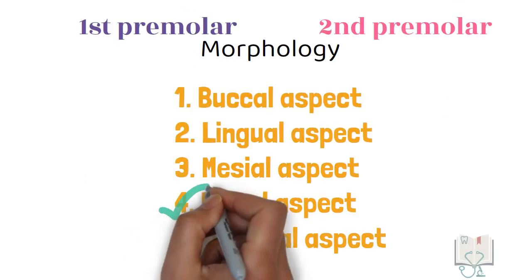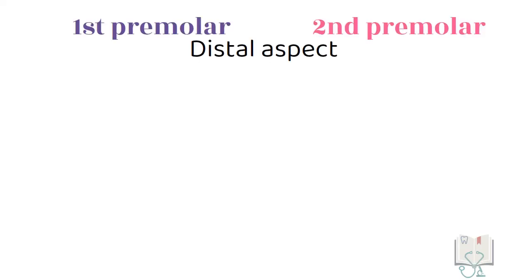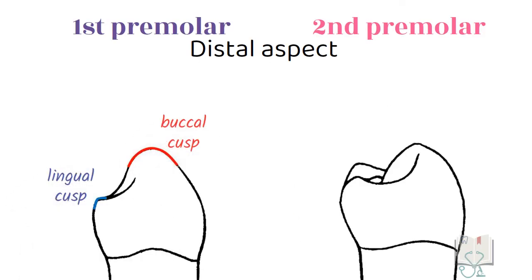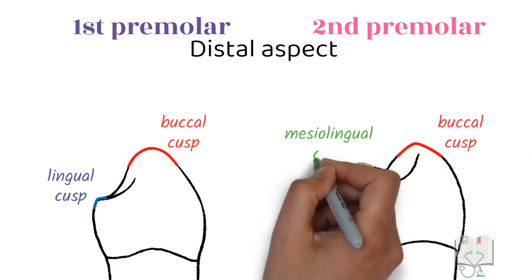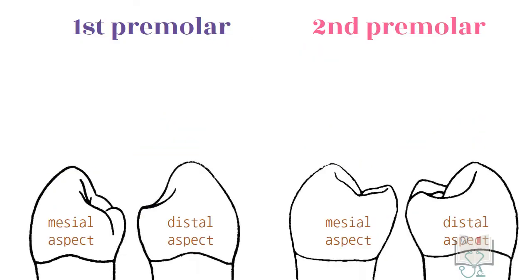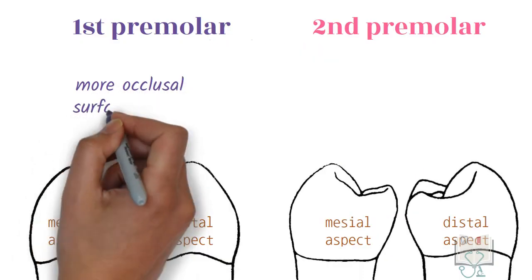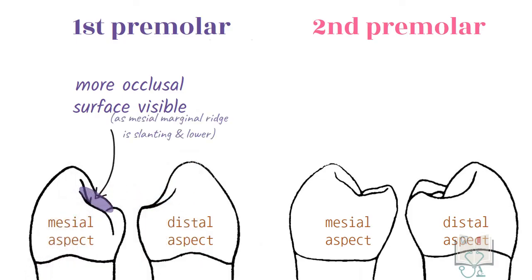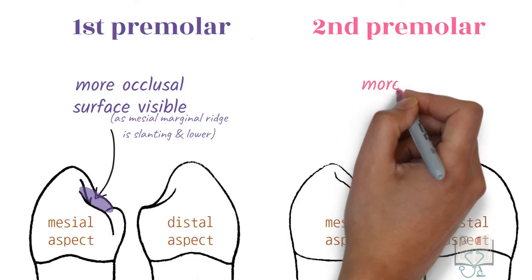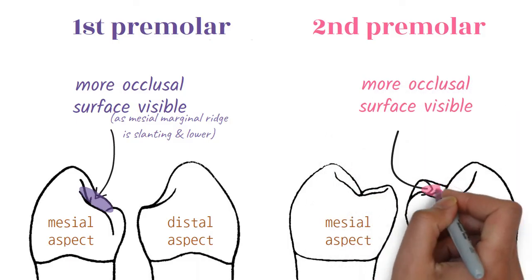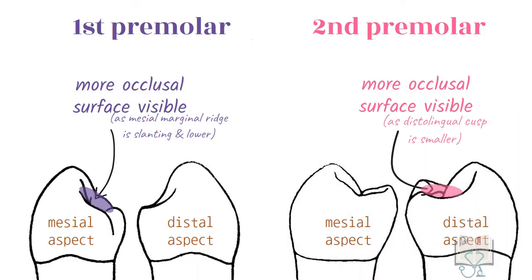Now the distal aspect. In the first premolar, like the mesial aspect, both the buccal cusp and lingual cusp are seen, but in the second premolar all three cusps — the buccal cusp, mesolingual cusp, and distolingual cusp — are seen. Interestingly, in the first premolar more of the occlusal surface is visible from the mesial aspect than the distal aspect. On the other hand, in the second premolar more of the occlusal surface is visible from the distal aspect than the mesial aspect.